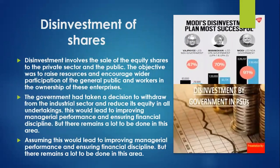Now talking about disinvestment of shares. What is the meaning of disinvestment? In any government company, minimum 51% shares should be held by the government. But now if the government starts selling these shares to the private sector, it is called disinvestment. It involves the sale of equity shares to the private sector and the general public. The objective was to raise resources and encourage wider participation of the general public and workers in the ownership of these enterprises.